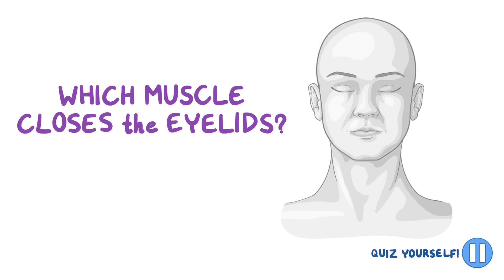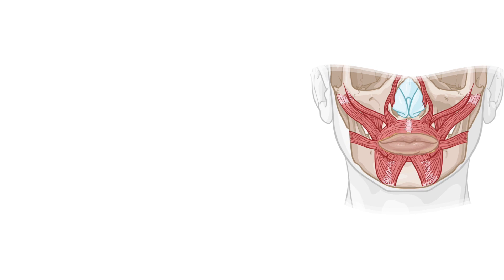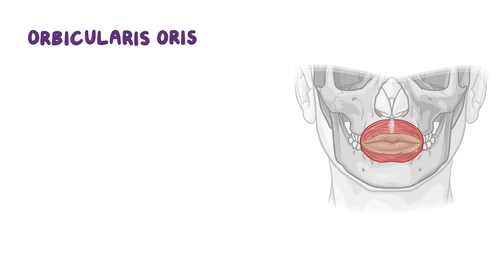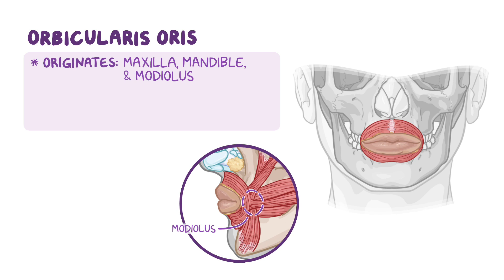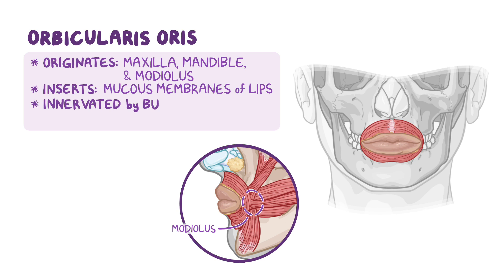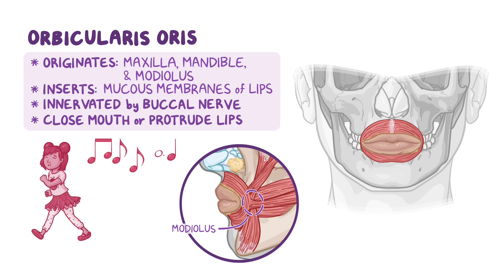Let's take a short break and try to remember which facial muscle closes the eyelids — it's the orbicularis oculi muscle. Now let's tackle some muscles in the oral region. First up is the orbicularis oris muscle, which encircles the mouth. It originates on the maxilla, the mandible, and on the angle of the mouth, called the modiolus. All of the fibers insert on the mucous membrane of the lips. It is innervated by the buccal nerve, and its function is to close the mouth by bringing the lips together and protrude the lips, like when kissing or whistling.